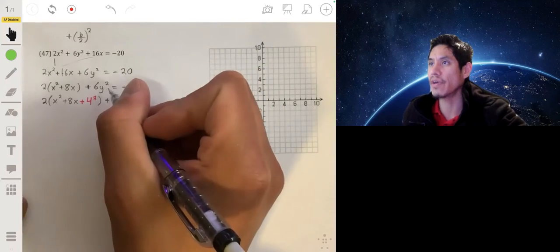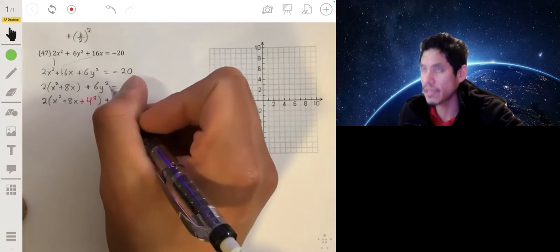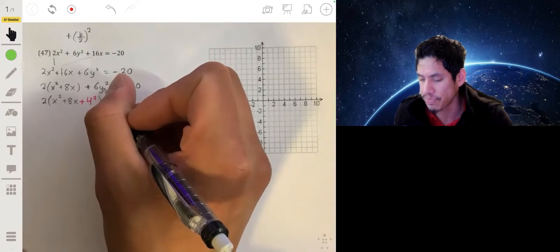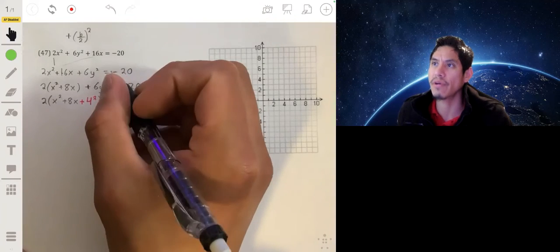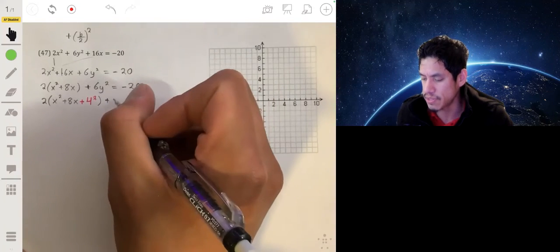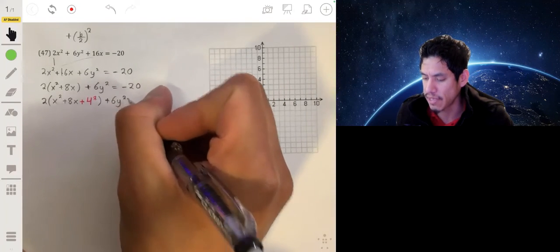Now for the y variables, there's actually no square to complete because you don't have a y term, you have a y squared term. So this one's actually taken care of, we don't have to do anything else for the y.